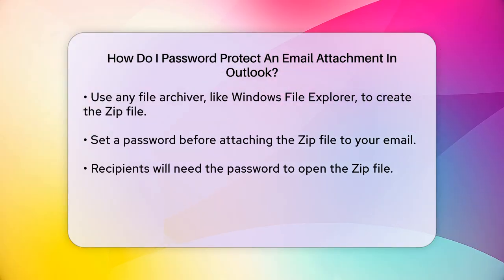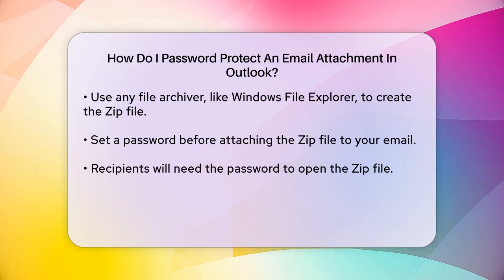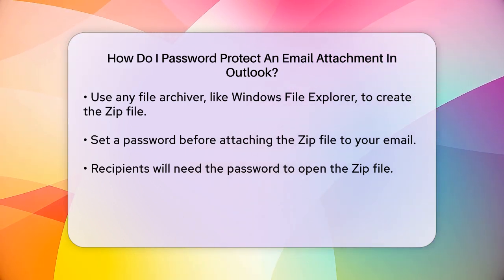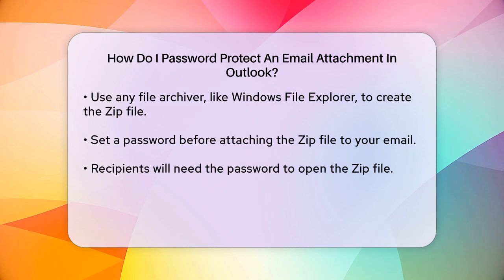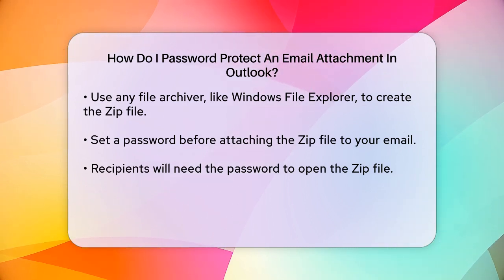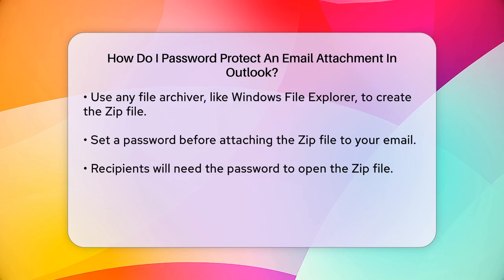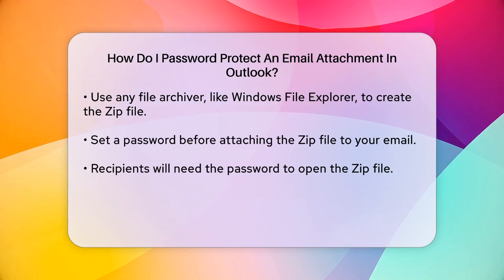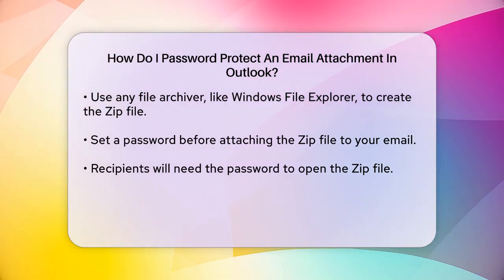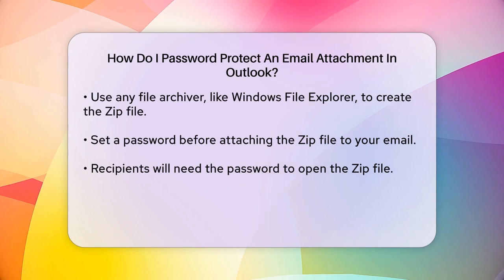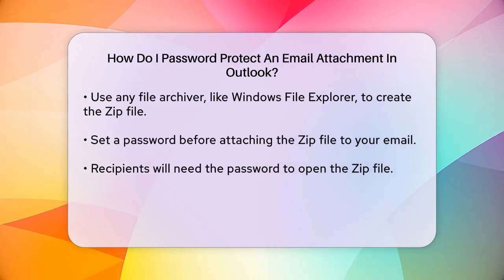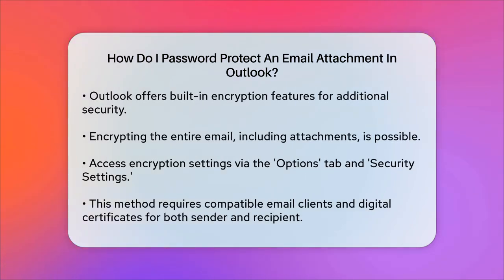For an added layer of security, you can also use Outlook's built-in encryption features, although these do not allow you to set a custom password. You can encrypt the entire email, including attachments, using Outlook's encryption settings. To do this, go to the Options tab in your email, select More Options, and then click on Security Settings. Here you can check the box to encrypt message contents and attachments.